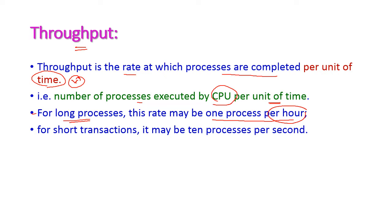When it comes to short transactions, the rate may be 10 processes per second — meaning 10 processes can be completed by the CPU per second. So throughput means the total number of processes executed per unit of time.